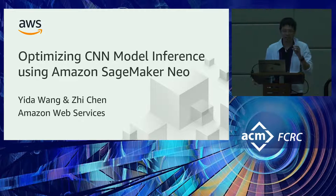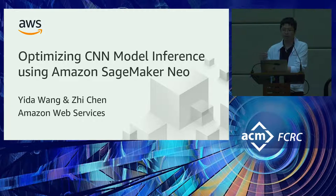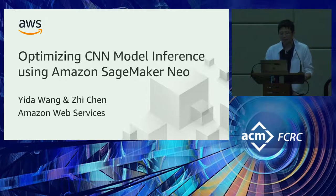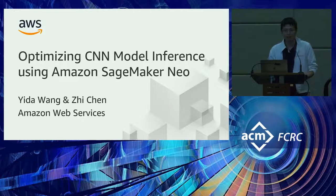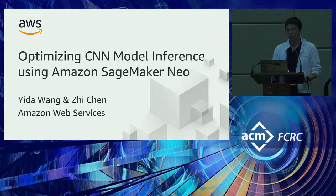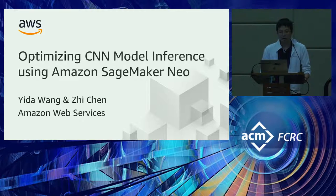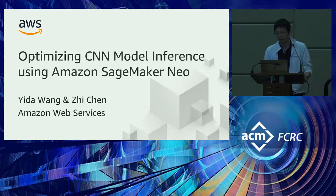Thank you. My name is Ida, I'm from AWS. Today I'm going to talk about how we optimize CNN model inference using a service called Amazon SageMaker Neo. We love TVM — Amazon is an active industrial contributor to the TVM repo and we have been contributing ever since. Based primarily on TVM, we built a service called Amazon SageMaker Neo, which allows you to optimize your machine learning model inference to execute efficiently on different kinds of hardware.